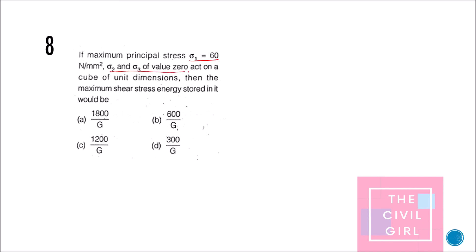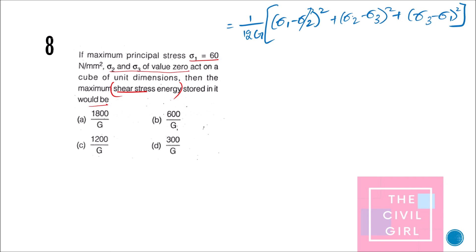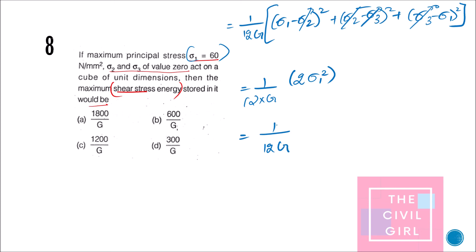Question 7: If sigma_1 = 60 and sigma_2 = sigma_3 = 0 acting on a unit cube, find the maximum shear strain energy stored. Using the distortion energy formula (1/12G): substituting sigma_2 = sigma_3 = 0 gives (1/12G) × 2·sigma_1² = (1/12G) × 2 × 60 × 60 = 600/G. The answer is option B.